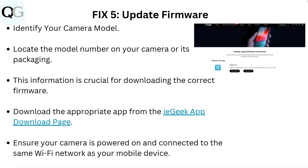Fix 5: Update firmware. Identify your camera model by locating the model number on your camera or its packaging — this information is crucial for downloading the correct firmware. Download the appropriate app from the iGeek app download page; the link will be mentioned in the description.